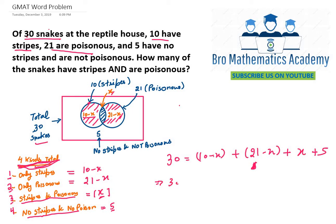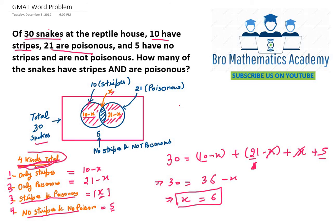On simplification, 30 equals 36 minus X. Adding 10, 21, and 5 gives 36, and the X terms cancel to leave just X, so X comes out to be 6. Therefore, 6 snakes have stripes and are poisonous. It's a very straightforward question — just figure out the four types, add them, and equate to 30.